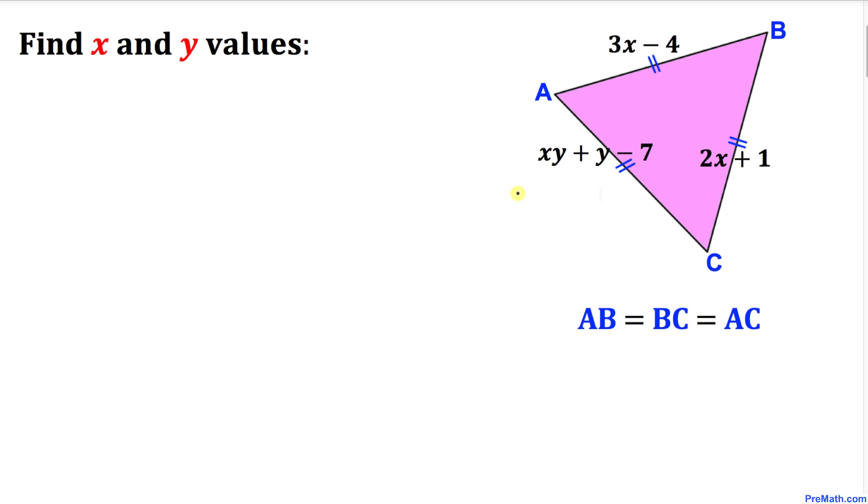Let's get started with the solution. Here's our very first step: let's consider side length AB equal to side length BC. We know our side length AB is 3x minus 4, and this other side length BC is 2x plus 1.